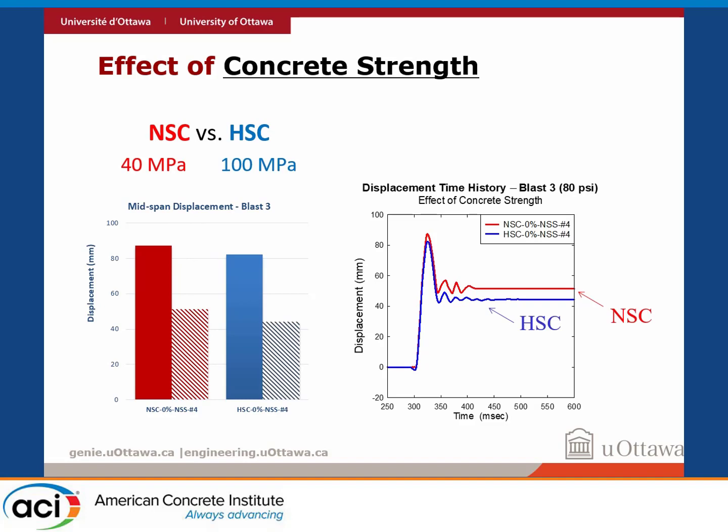Starting with the first series — just looking at high-strength concrete. Comparing a 40 MPa column versus a 100 MPa column, they're behaving almost the same, with very similar displacement time histories. The high-strength concrete column gives you a slightly better response, but it's not dramatic. Maximum displacement is reduced slightly with high-strength concrete, and residual displacement is also reduced slightly, but the effect is limited.